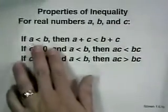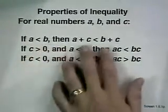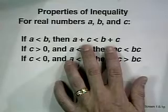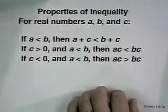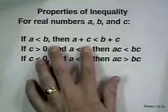The properties of linear inequalities look a lot like the properties for equations. If a is less than b, we can add the same quantity to both sides of the inequality and it remains true. That's the addition or subtraction property.